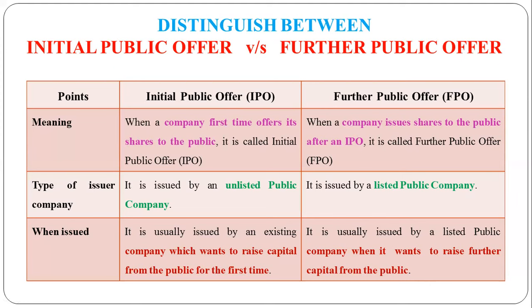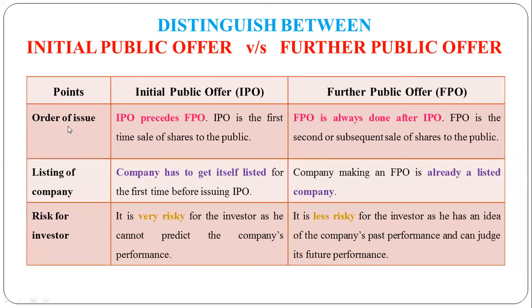The company has the option to raise additional capital beyond what was previously issued. The first time a company raises capital, the Initial Public Offer is used. Regarding order of issue: IPO precedes FPO, meaning IPO comes first. FPO comes after the IPO — it is the subsequent second, third, fourth, or fifth time the company sells its shares.